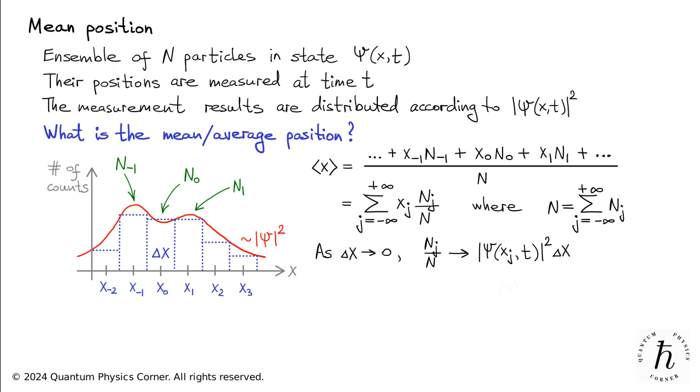Consequently, the expression for the mean position is replaced by this sum, which is essentially the Riemann sum representing the integral of x multiplied by the square of the modulus of psi. This gives us our final formula for the mean position of the particle. If the particle's wave function is known, this formula enables the calculation of the position where the particle is expected to be found on average.